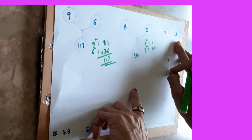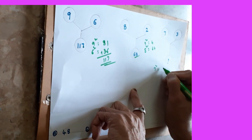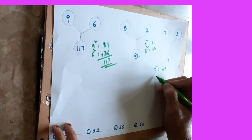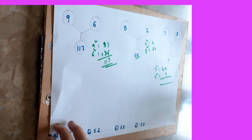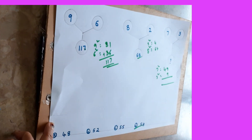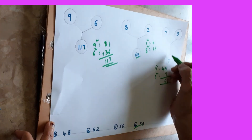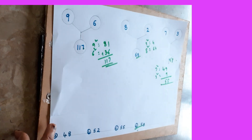Same way continue here also: 7 squared — 7 sevens are 49. 3 squared — 3 threes are 9. 49 plus 9 is 58. 58 is here already, so option D is correct — this place you will get 58. This is the way you have to do.